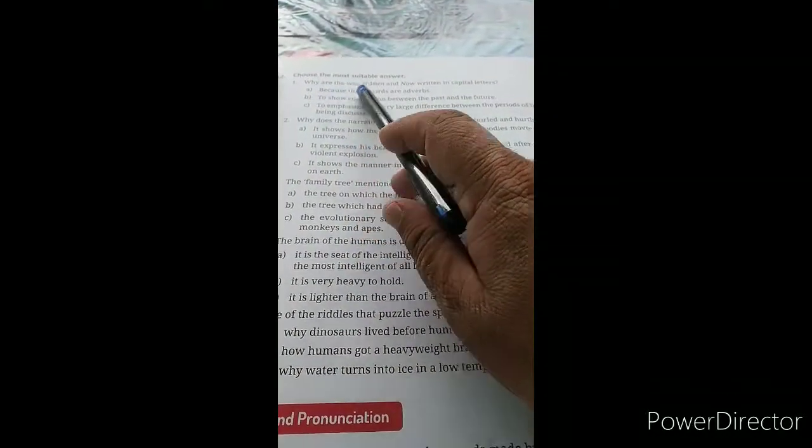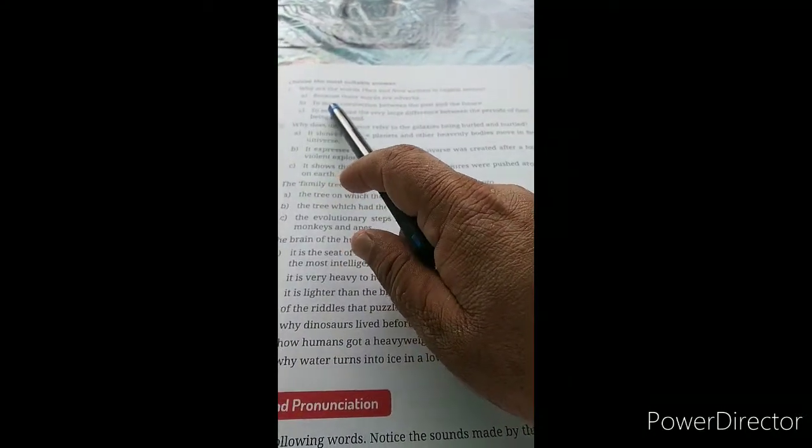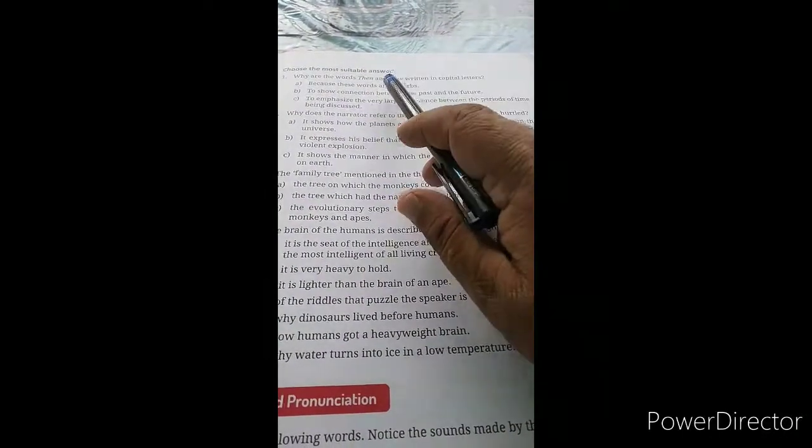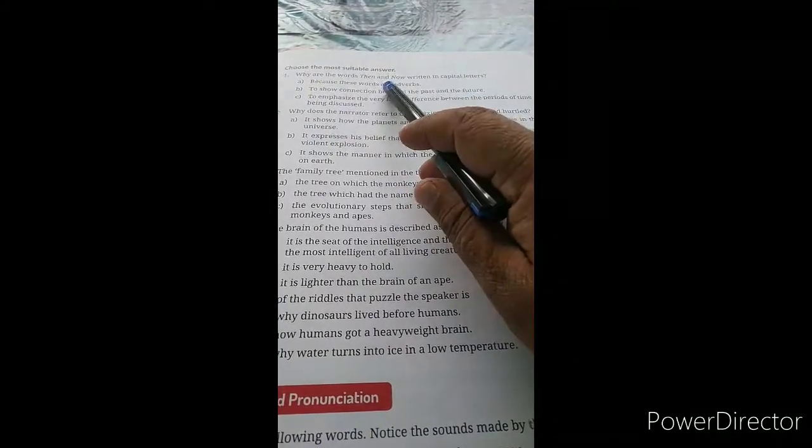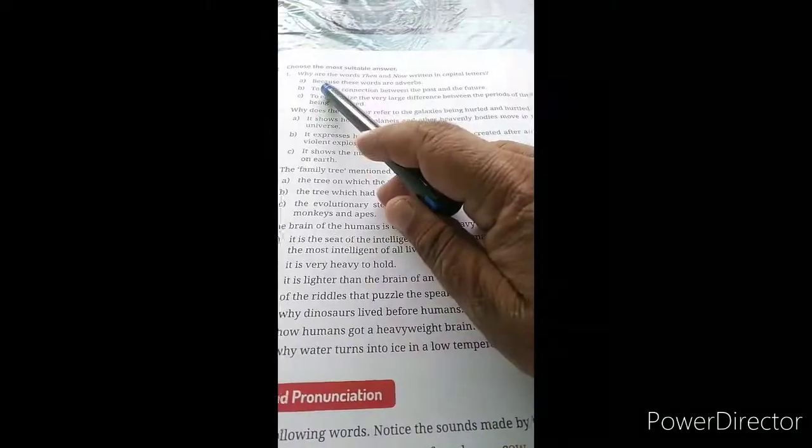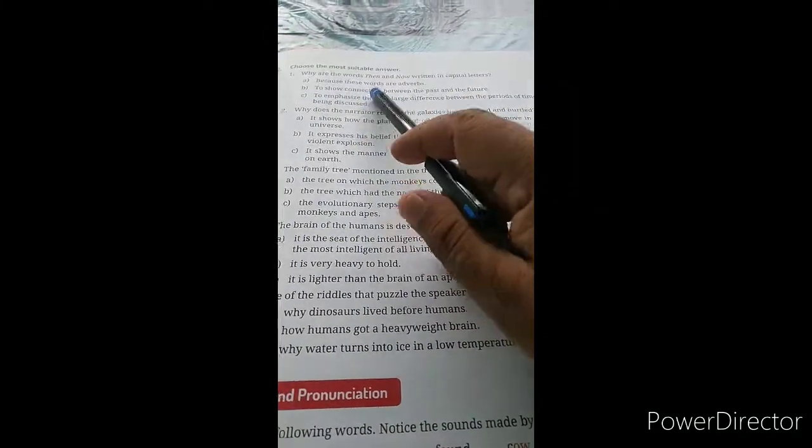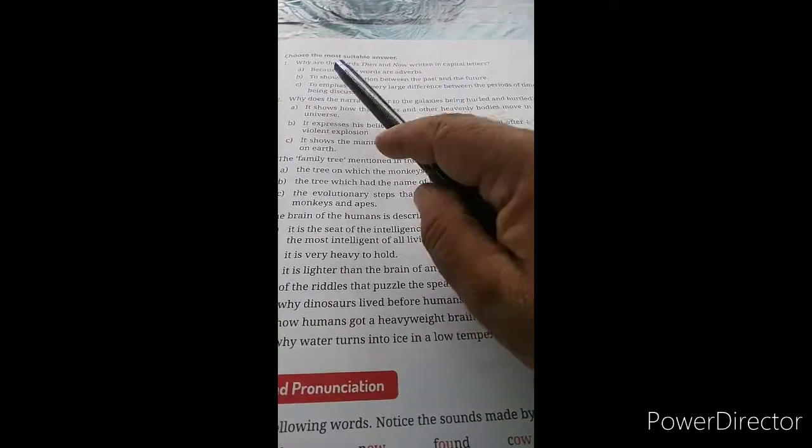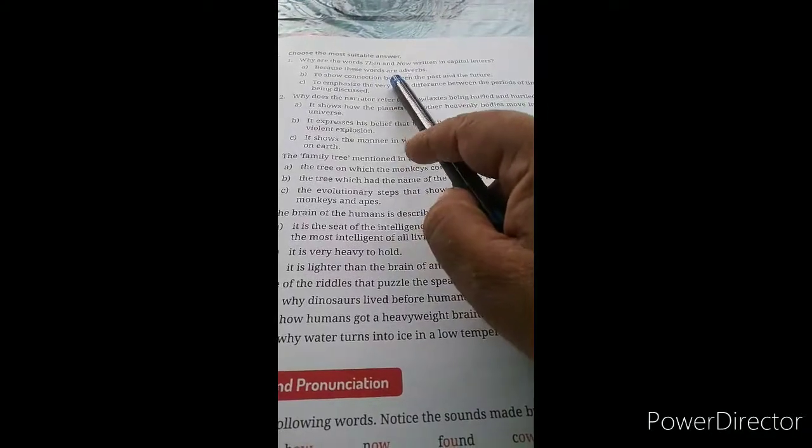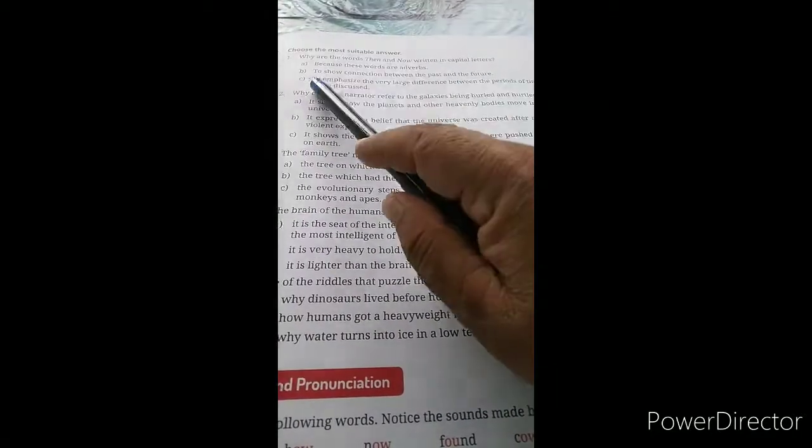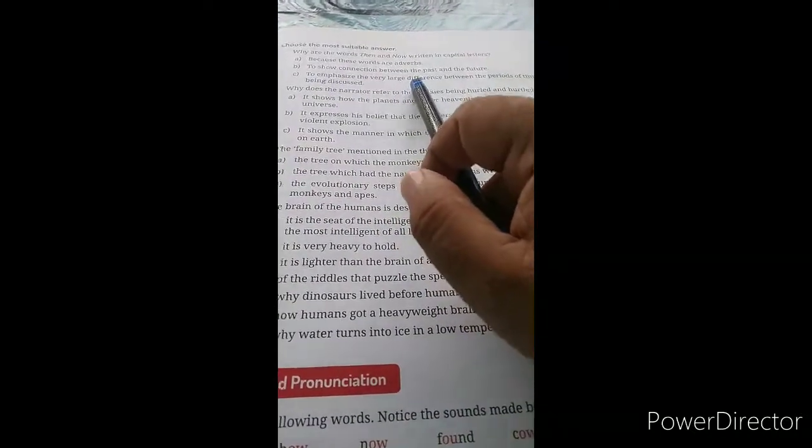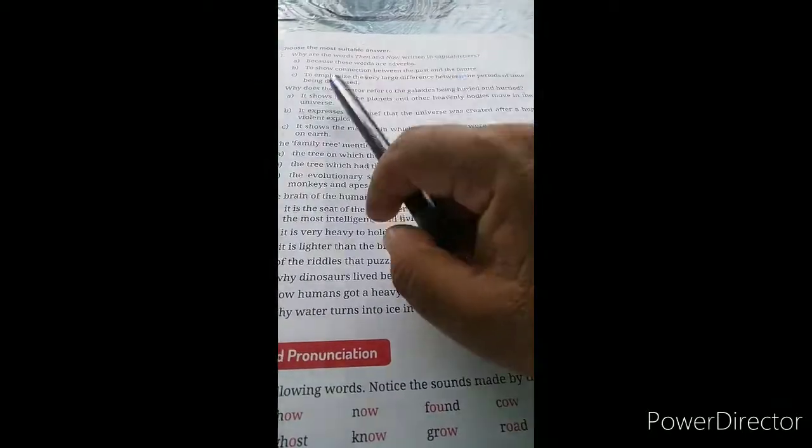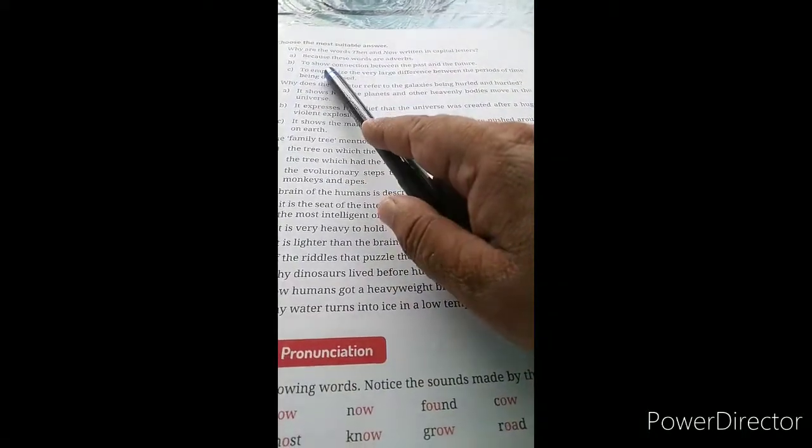What is saying in A2? Choose the most suitable answer. Question one: Why are the words 'then' and 'now' written in capital letters? Then and now को capital letter में क्यों लिखा गया है? The options are: A - because these words are adverbs, B - to show connection between the past and the future, C - to emphasize the very large difference between the periods of time being discussed. The suitable answer is B, to show connection between the past and the future.